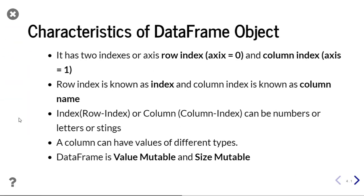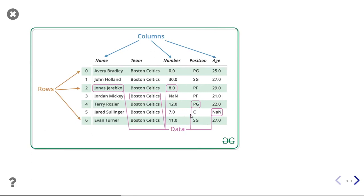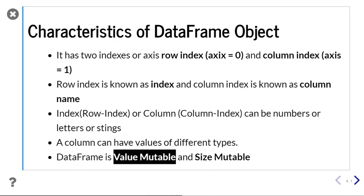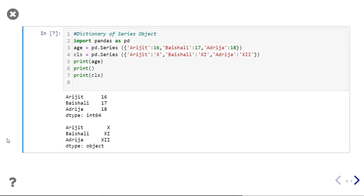The last characteristic is that DataFrame is value mutable and size mutable. Value mutable means we can change the values inside a DataFrame. Size mutable means we can add any number of rows or columns, and we can also remove columns or rows. So value mutable means we can change the data values, and size mutable means we can add or remove rows and columns. Let us now see some practical examples.